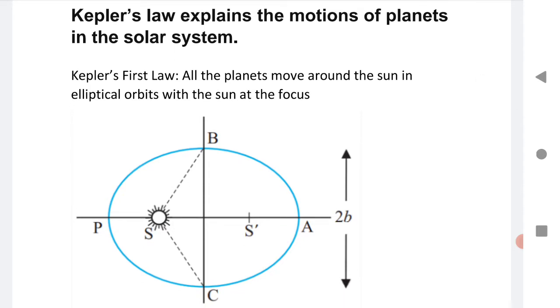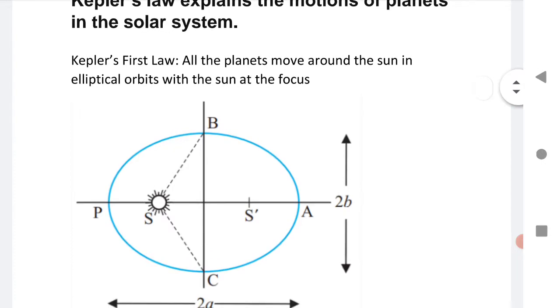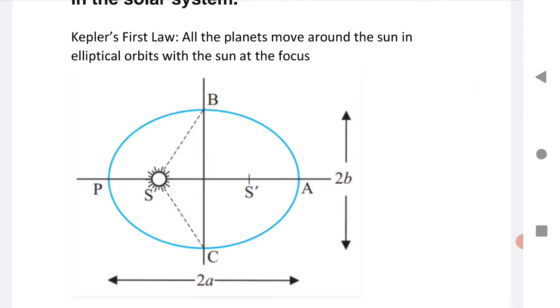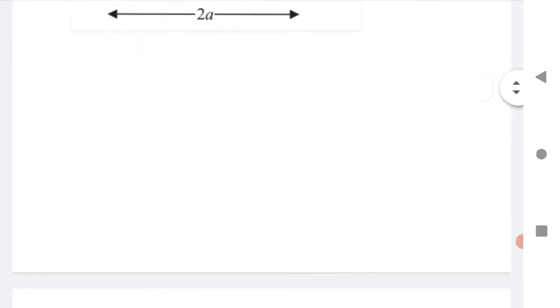Kepler's law explains the motion of planets in the solar system. Kepler's first law: all planets move around the sun in elliptical orbits with the sun at the focus. This is the diagram of the first law.